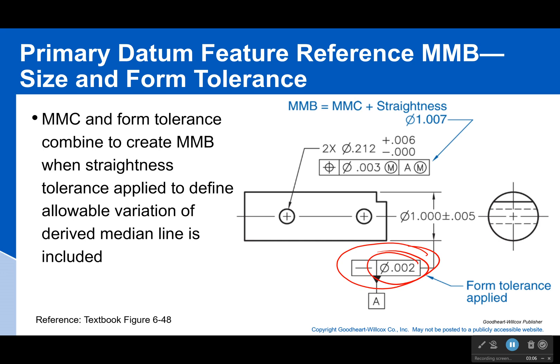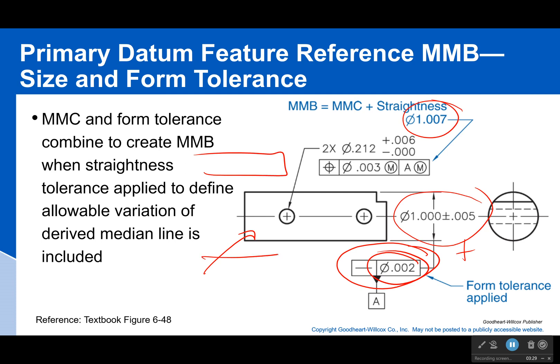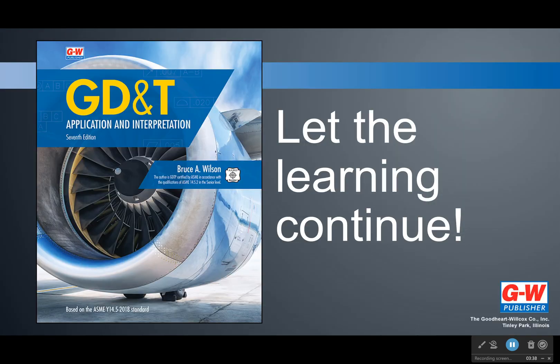Since the straightness tolerance is applied to an axis, it means that this feature is allowed to bow 0.002 even when it's at the max material condition. So my max material boundary is going to be whatever my max material condition size is, plus that tolerance, giving me 1.007 inches. If I have a chuck holding on to this, it's going to stop at 1.007 inches because of that straightness tolerance.